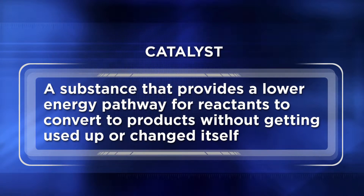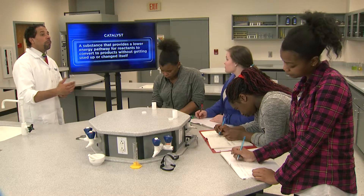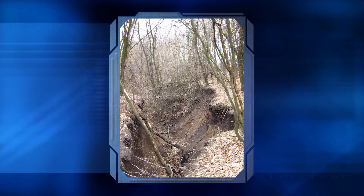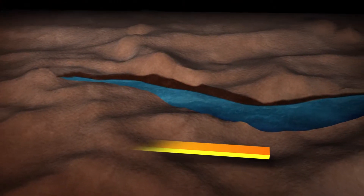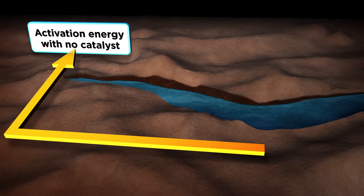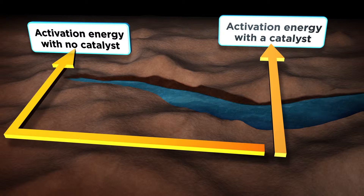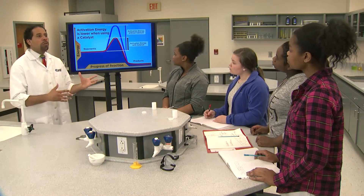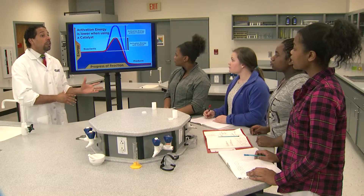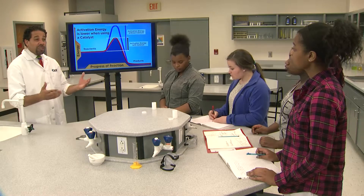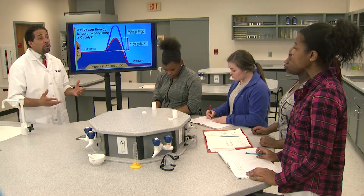A catalyst is a substance that provides a lower energy pathway for reactants to convert to products without getting used up or changed itself. The activation energy for a reaction is lowered when using a catalyst. Imagine you're hiking through the woods and you come to a large gully. You could either walk around the entire gully, which would take a lot of energy, or use a catalyst to provide an easier and quicker route — like tying a rope to a tree and swinging across, or finding a log long enough to lay across it. You'd use less energy crossing the gully, reach the other side more quickly, and the rope and log are reusable for other hikers who come along later.